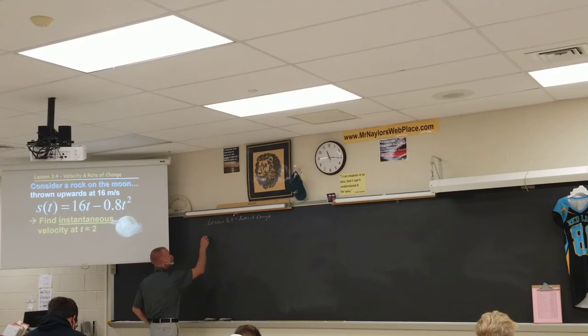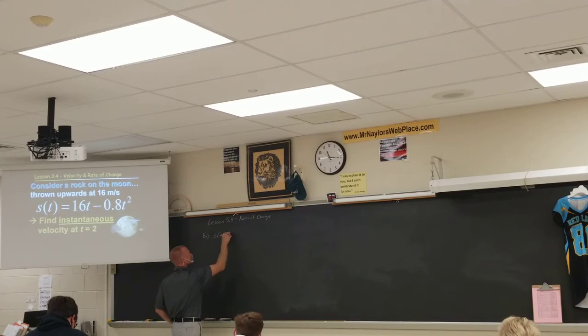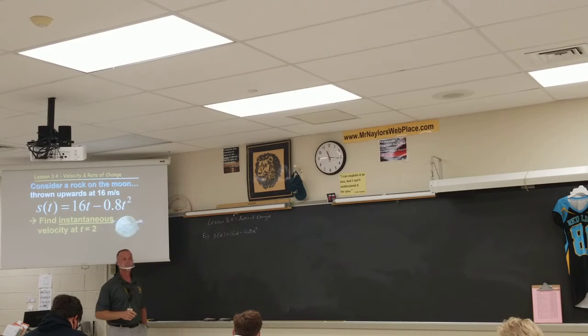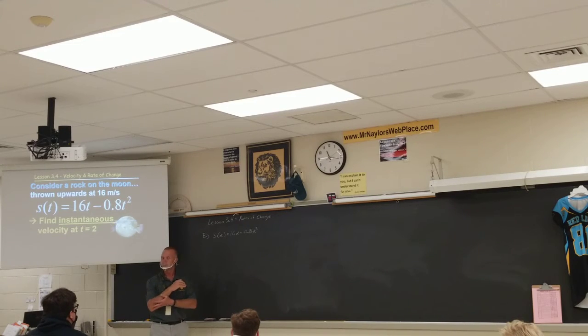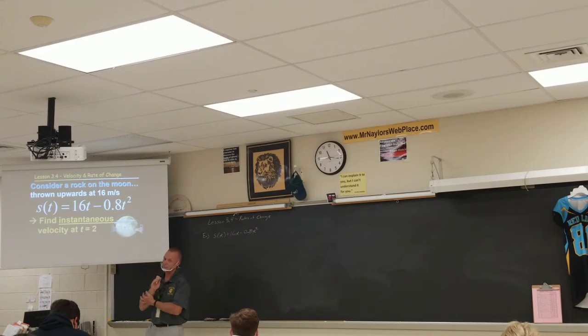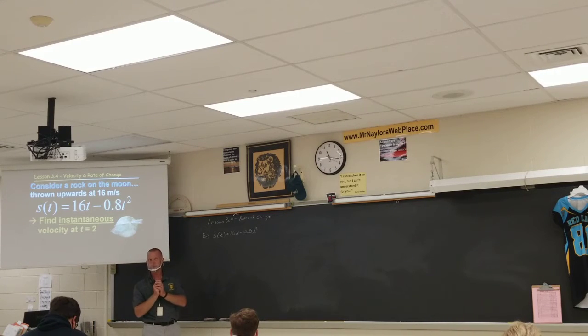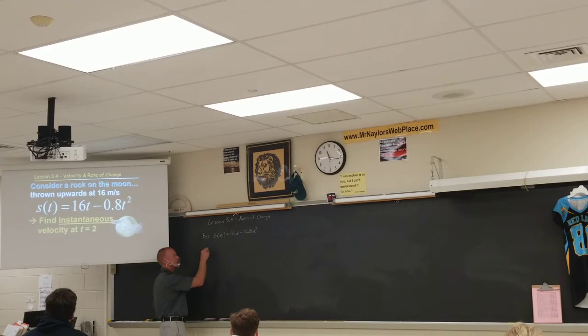We're going to find the instantaneous velocity when the time is 2. Now I want to make sure that you're getting the main idea. I also want you to make sure that you don't make this too hard. When you see the word instantaneous velocity, that's kind of code for the derivative because the derivative is going to be a tangent, and a tangent is like a straight line that gives you the slope at that instant point. So instantaneous velocity is really just a fancy word for the derivative.